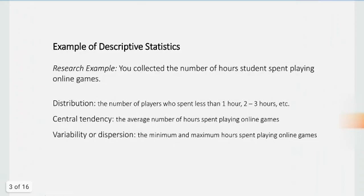This is a research example just so you can better understand it. So, for example, you collected the number of hours spent by students playing online games. So, of course, in distribution, you can have a table showing how many of the players spend 1 hour, how many spend 2 to 3 hours, and so on. So that's showing the distribution of the data. In central tendency, you can say the average number of hours spent playing online games. So, maybe 2.5 hours in a week, and so on. And then, variability. What's the minimum and maximum number of hours spent playing ML, for example? Maybe there are extreme values. Maybe some of them are able to spend more than 10 hours. Maybe some of them are only spending 1 hour in a day, and so on. So, these are the three ways to describe your data.